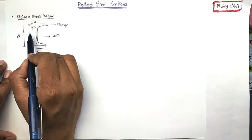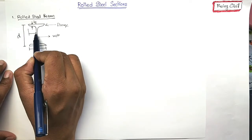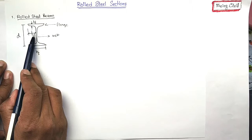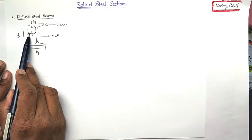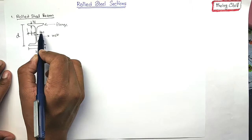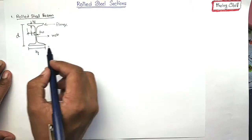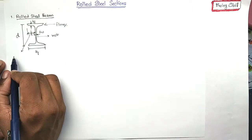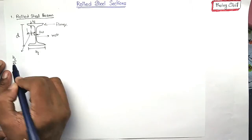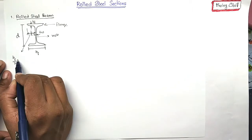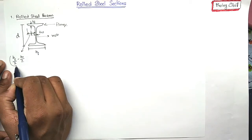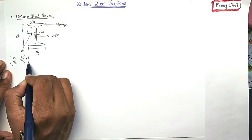So, this TF is calculated at a distance half of this distance. If this is the web, thickness of web is TW, then this distance is BF by 2 minus TW by 2 times 1 by 2.